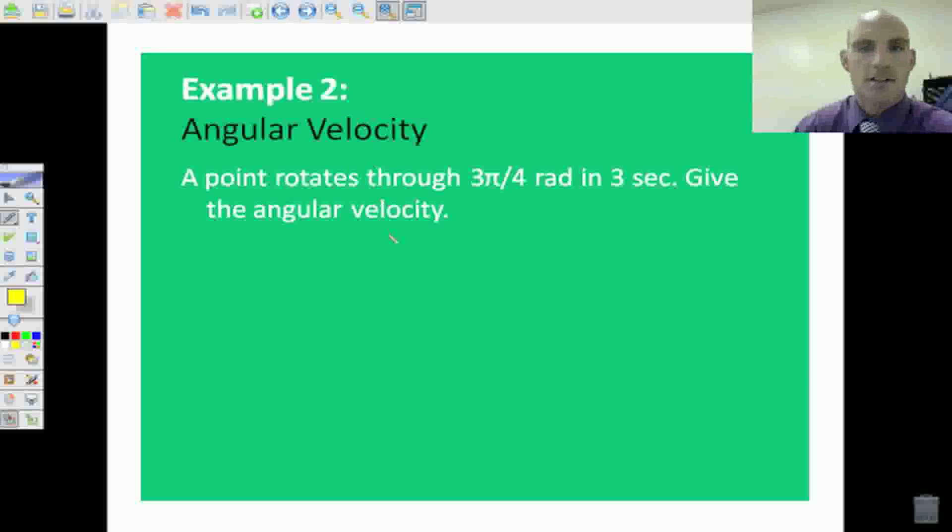As far as angular velocity is concerned, it could be a little bit more difficult, except we remember that it's theta in radians and we're going to divide that by time. So we're going to say that this is equal to omega. So omega equals 3 pi over 4 divided by 3.